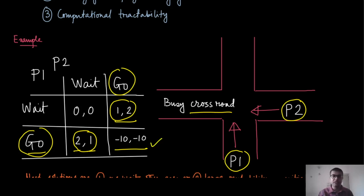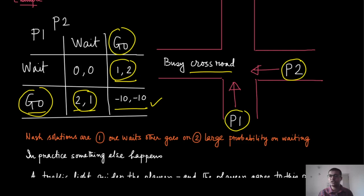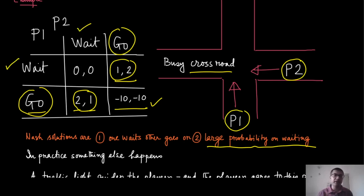Looking at the mixed strategy Nash equilibrium further, both players have a large probability mass on waiting, so most of the time they will be waiting, giving them very little payoff. There is a small probability that both go and crash, and the rest of the probability is distributed such that one goes and the other waits. But this is not reasonable, because that is not how this interaction actually happens.